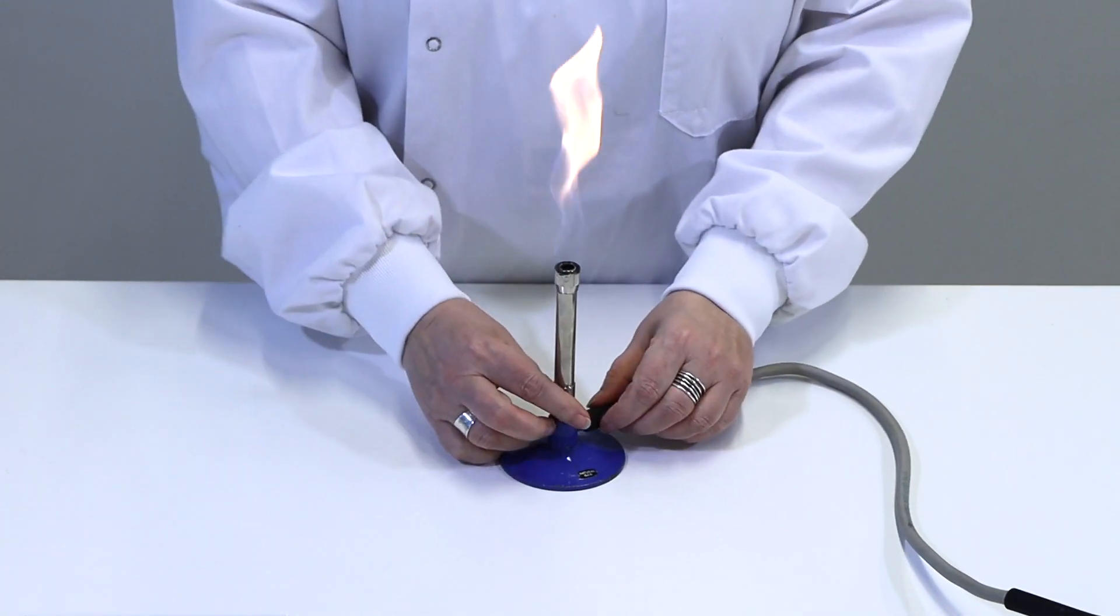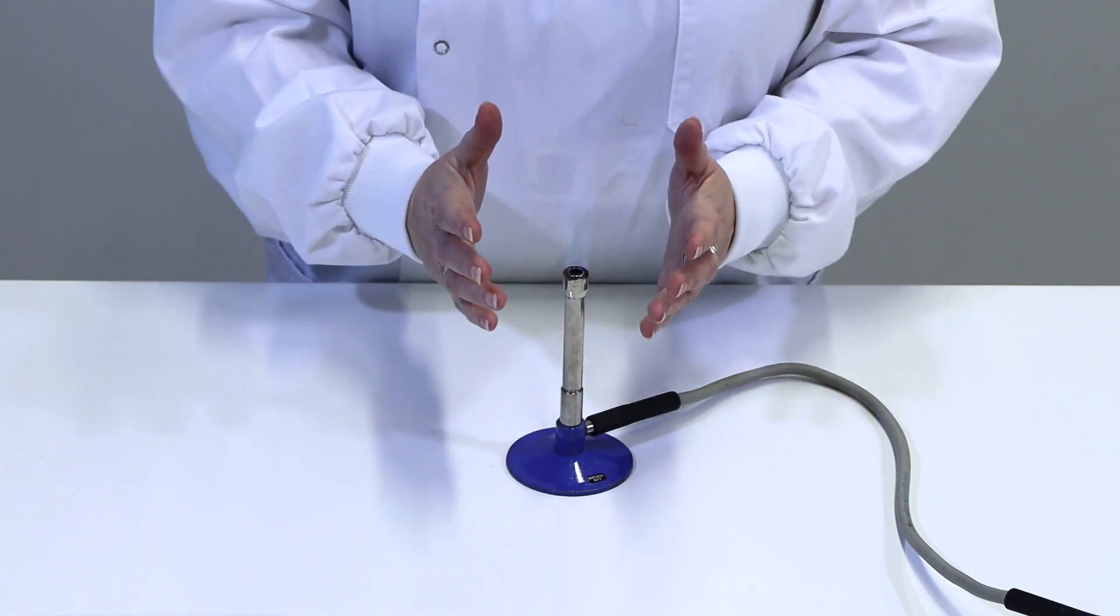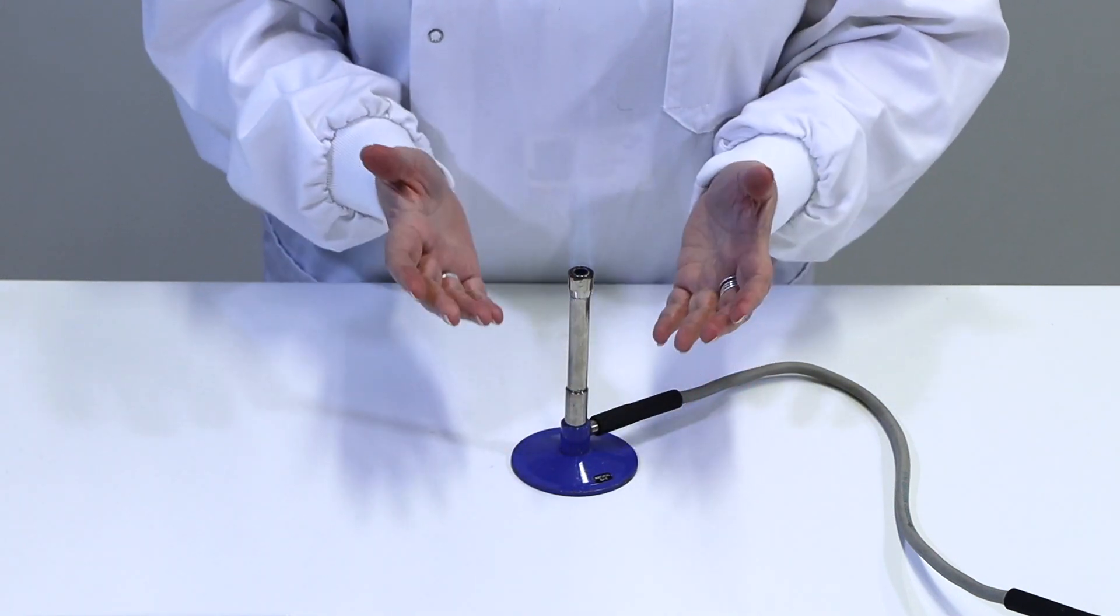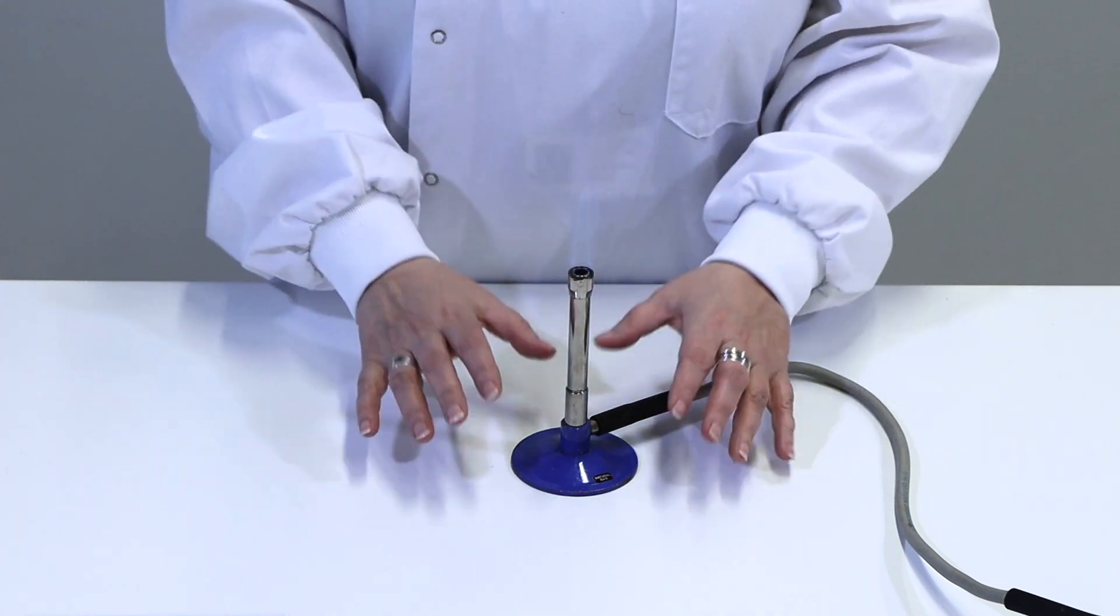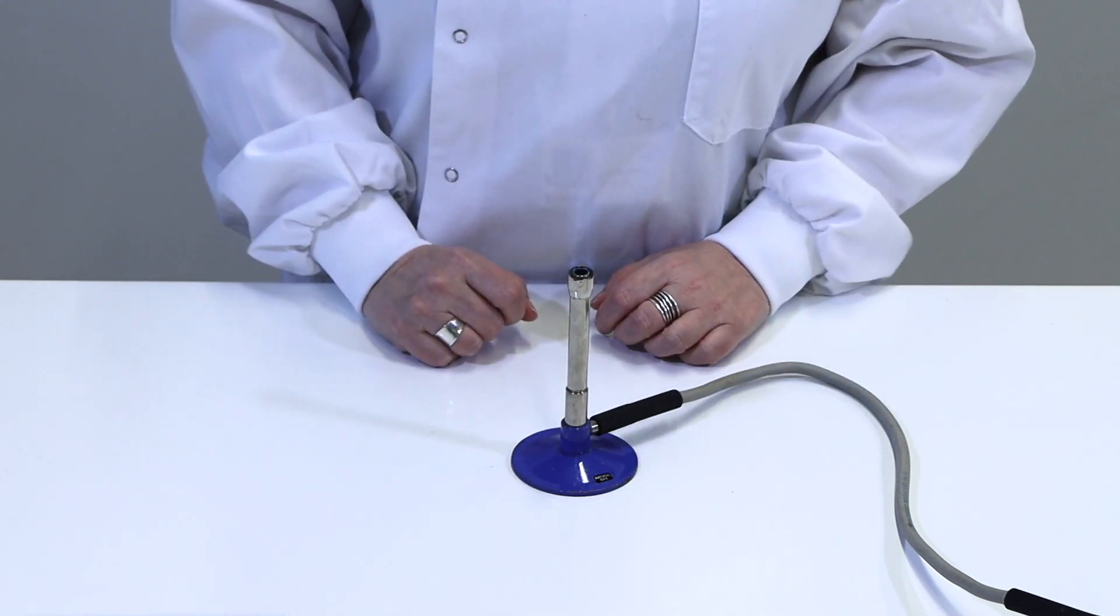So hot air rising if you put it on a full strength blue flame will be enough to make sure that microbes rise up and away from your experiment rather than into it causing contamination.